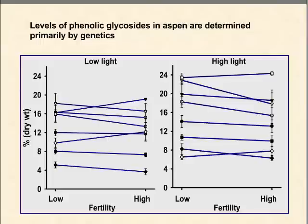We have eight different clones grown under low light conditions, those same clones grown under high light conditions, and within each panel we have low and high soil fertility. The take-home message with phenolic glycosides is that most of the variation we see is genotypic — most of the variation is in the vertical dimension, representing differences among clones. High light levels do enhance production of phenolic glycosides somewhat, and there's very little impact of soil fertility on phenolic glycoside production.